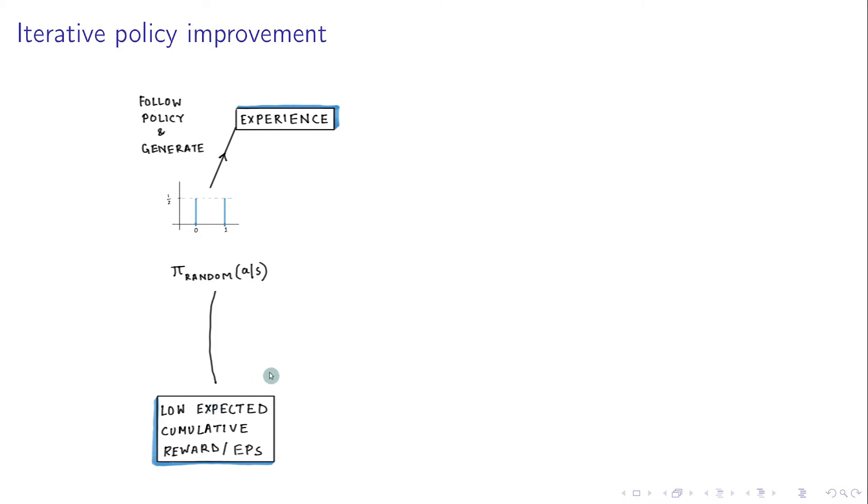So in the next step, the agent exploits its collected experience to create a better policy, Pi1, which gives us higher expected cumulative rewards per episode. And this phase is called exploitation.